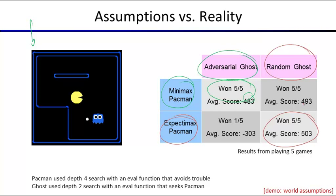Running minimax against a random ghost: we're very pessimistic but it doesn't hurt too much. Expectimax would give 503 on average; minimax gives 493. In this scenario, being pessimistic was nearly as good. If you don't know how the ghost is playing, minimax works out well in both cases, though expectimax is great when the ghost is truly random but very bad when the ghost is adversarial.